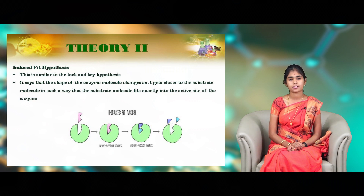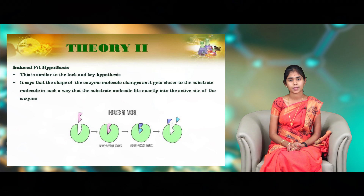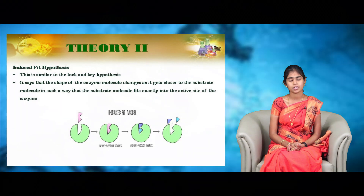The induced fit hypothesis is slightly similar to the lock and key hypothesis. In this picture, the green color represents the enzyme and pink color is the substrate. The structure of the active site is different from the structure of the substrate, so they cannot fit with each other initially. When the substrate comes nearest to the active site, the active site undergoes a conformational change so that they both fit with each other to give the product.